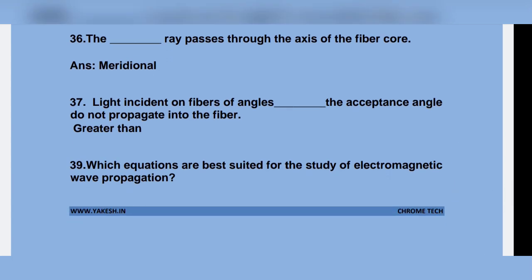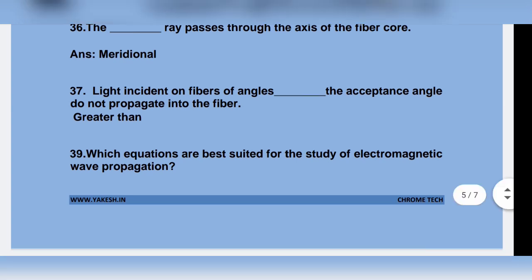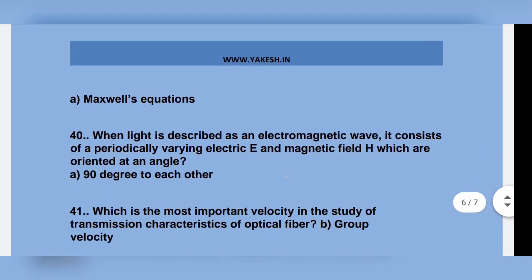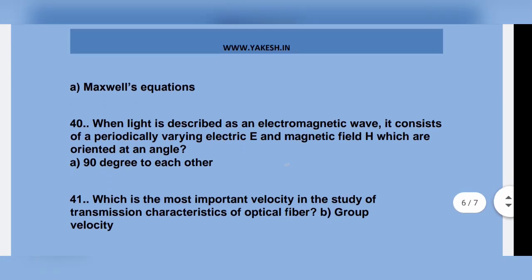Which equations are best suited for the study of electromagnetic wave propagation? Maxwell's equations. When light is described as an electromagnetic wave, it is considered as a periodically varying electric field E and magnetic field H which are oriented at an angle of 90 degrees to each other.